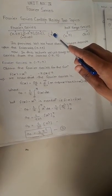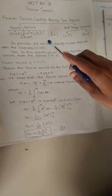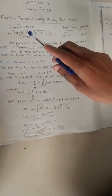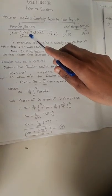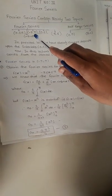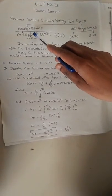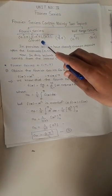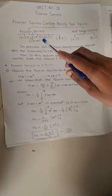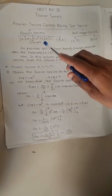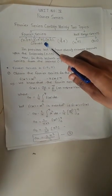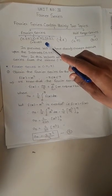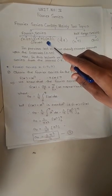In the previous lecture, we saw examples based on the interval zero to pi. Now in this lecture, we will explain the Fourier series in the range from minus pi to plus pi. For this, we require one important concept — that concept is the even function and odd function. So firstly, we will see the concept of even function and odd function.